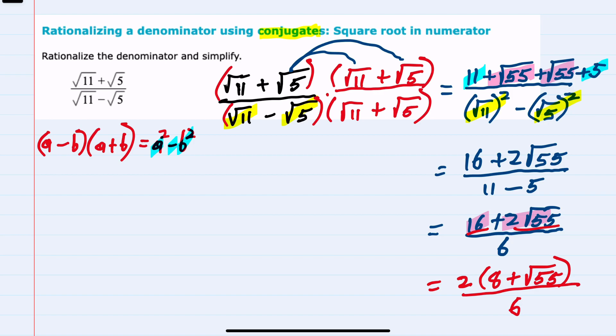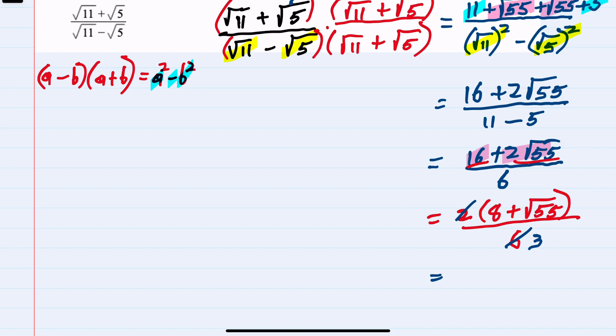And from here, I can see that that 6 in the denominator and 2 in the numerator will cancel, leaving me with 3 in the denominator. So, rewriting this one last time, we have the 8 plus the square root of 55 in the numerator and just a 3 in the denominator. This is our simplest form.